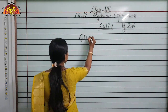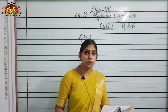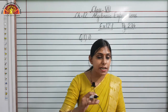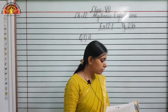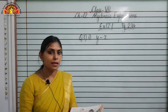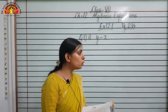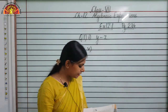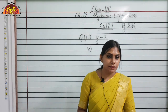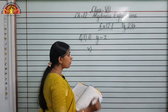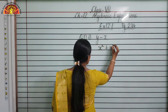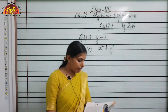Question number 1: Get the algebraic expressions in the following cases using variables, constants, and arithmetic operations. First part: subtraction of z from y — the expression is y minus z. Fifth part: numbers x and y both squared and added — the expression is x² plus y².